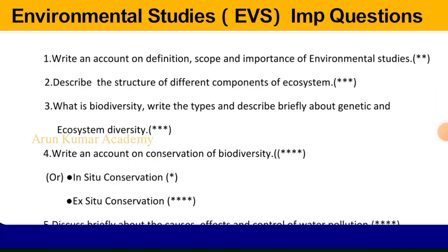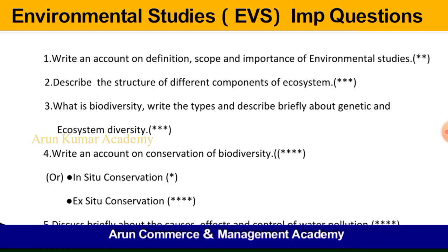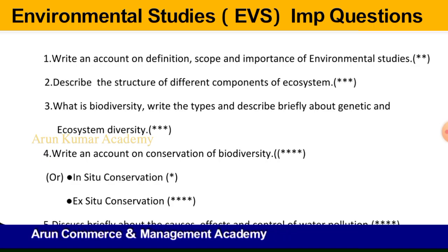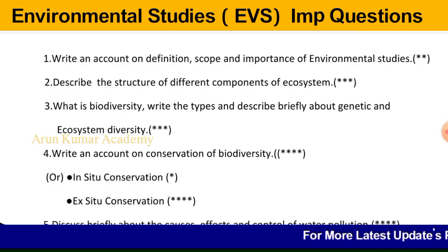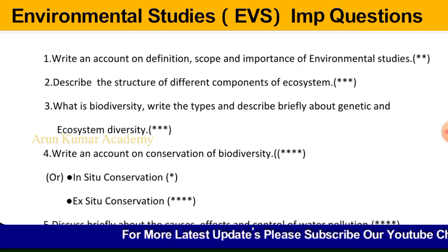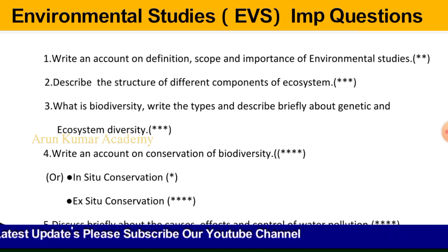Question number four: write an account on conservation of biodiversity. Conservation refers to protection, preservation, management, or restoration of biological and natural resources. The reasons for conserving biodiversity include preserving valuable natural resources for future generations. Conservation of biodiversity is of two types: first, in-situ conservation; second, ex-situ conservation. Explain both in detail. They may also ask about only one type of conservation.